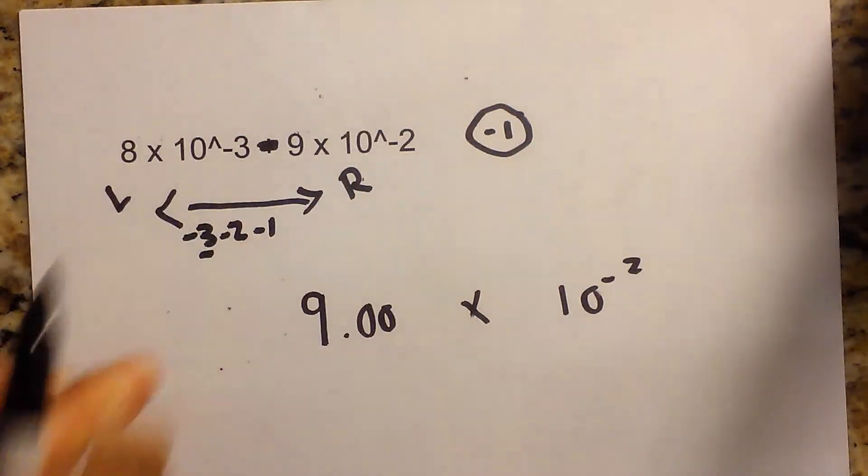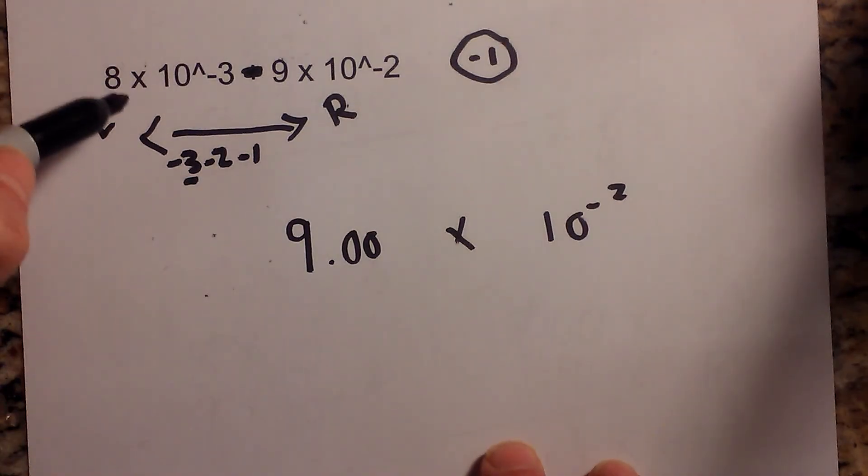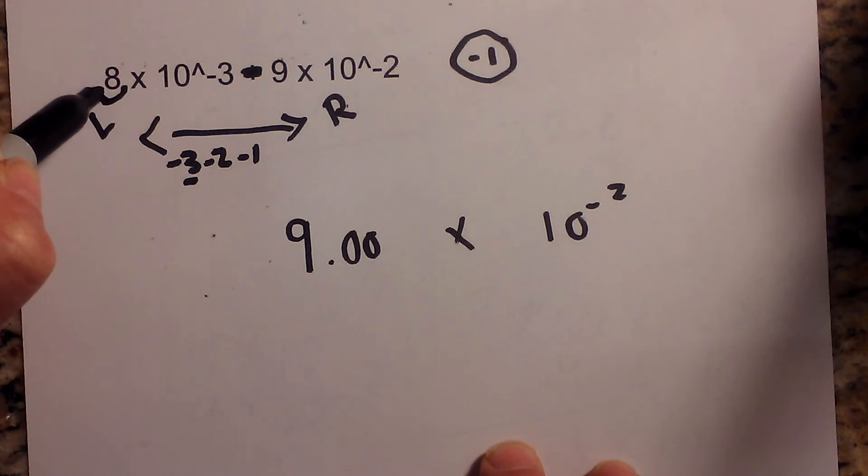I'll have 0.8 times 10 to the negative 2 minus 9 times 10 to the negative 2. I'm going to move the decimal 1 to the left for this 8, so that becomes 0.8.